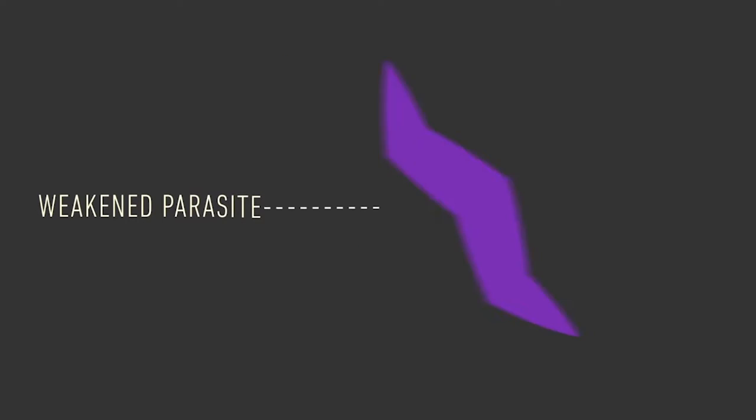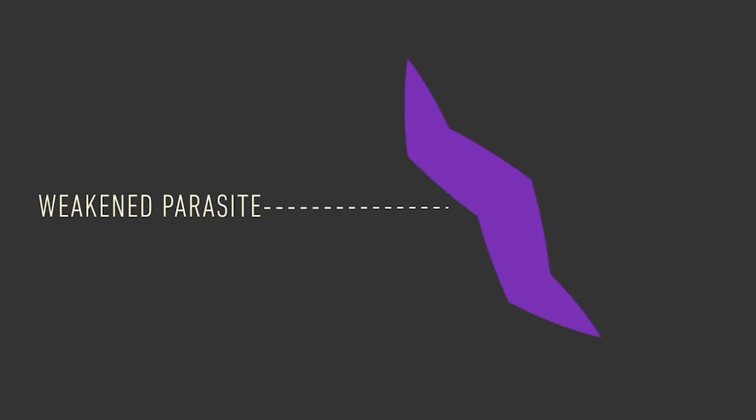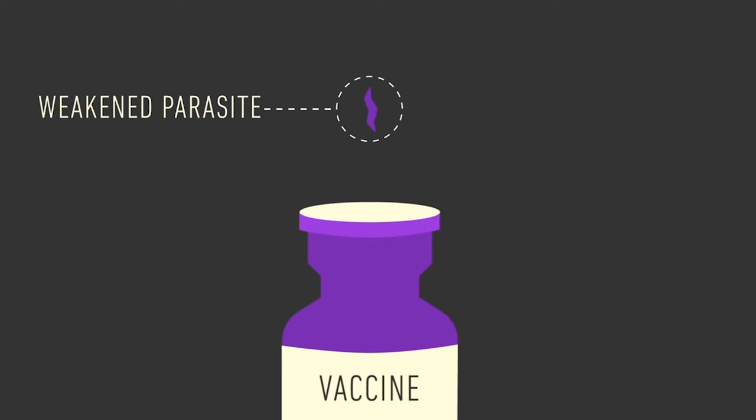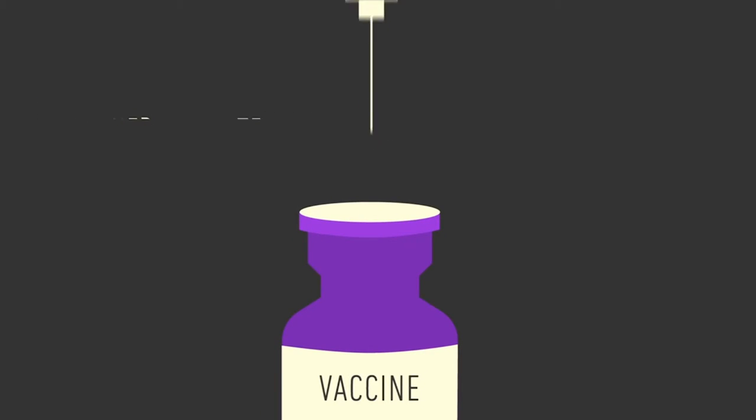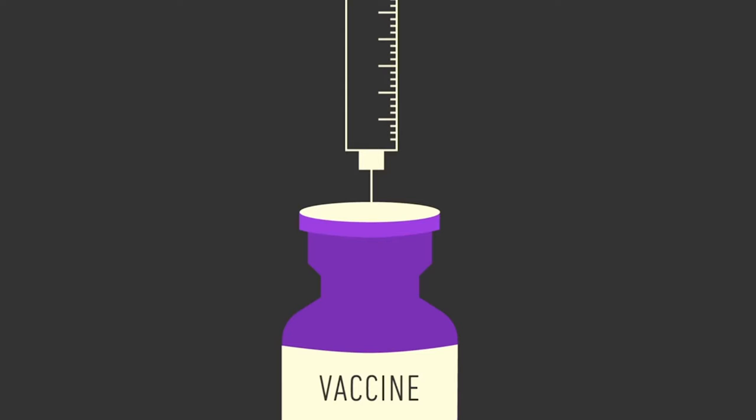This weakened parasite can then be purified and bottled as a vaccine in the same way that weakened versions of the polio virus have been used to nearly rid the world of polio.